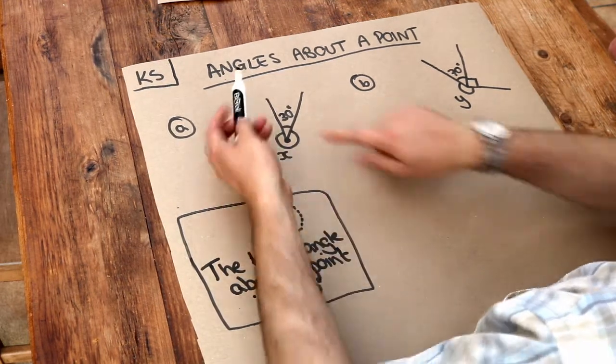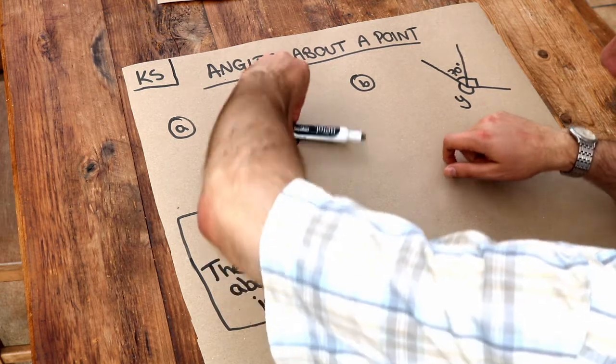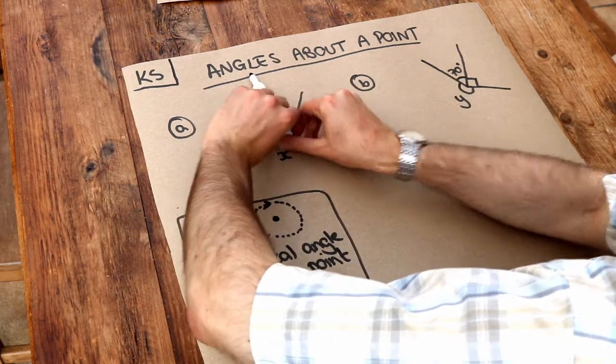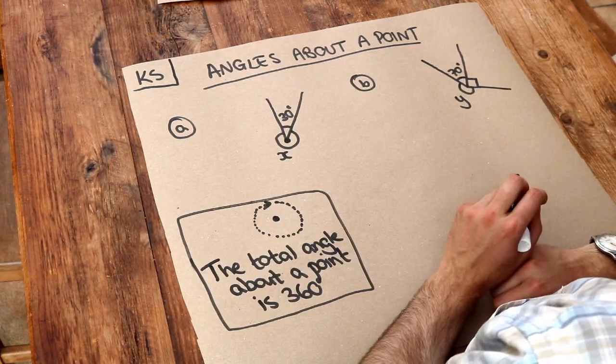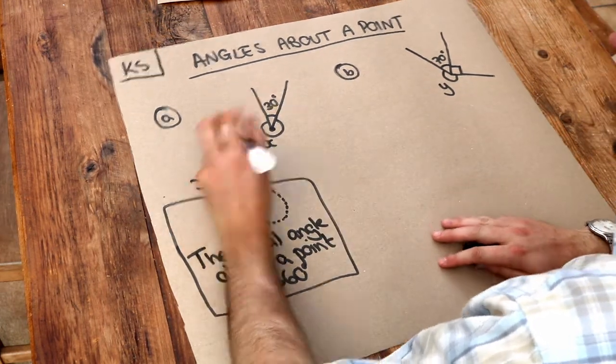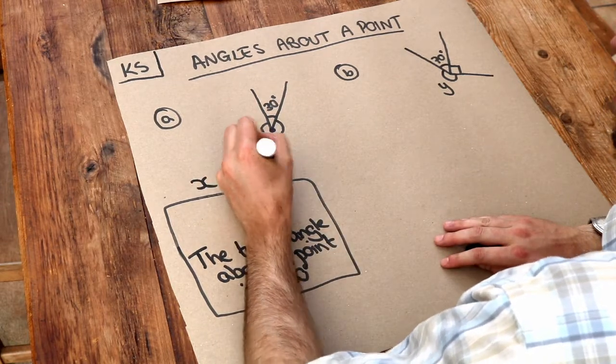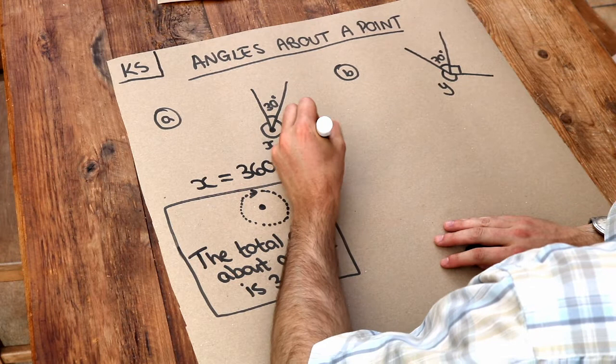And that means that this 30 degrees here, plus that angle of x there, must add up to 360 degrees. So all we need to do to find x is just take away that 30 degrees from 360 degrees so that they add up to 360.